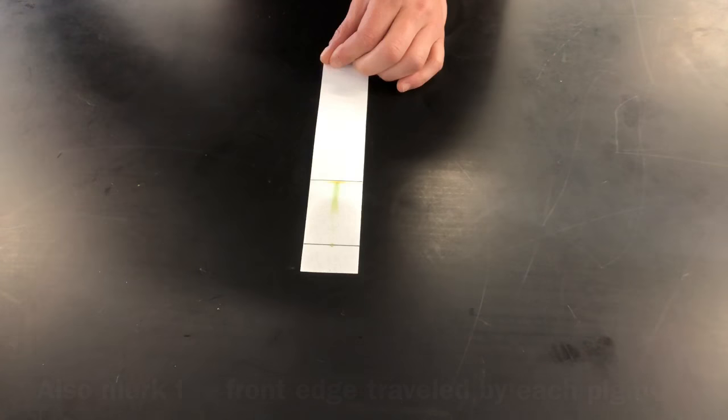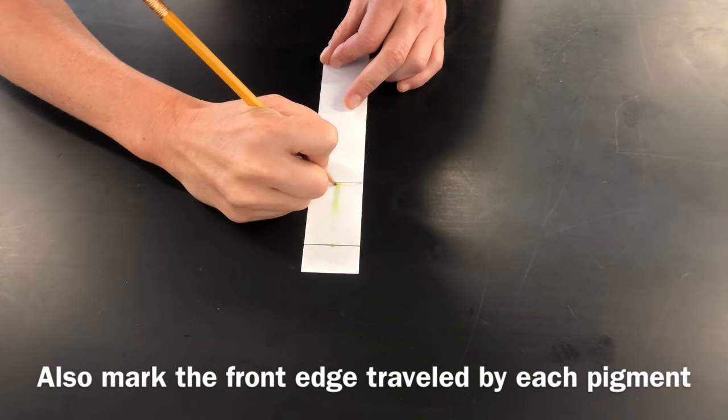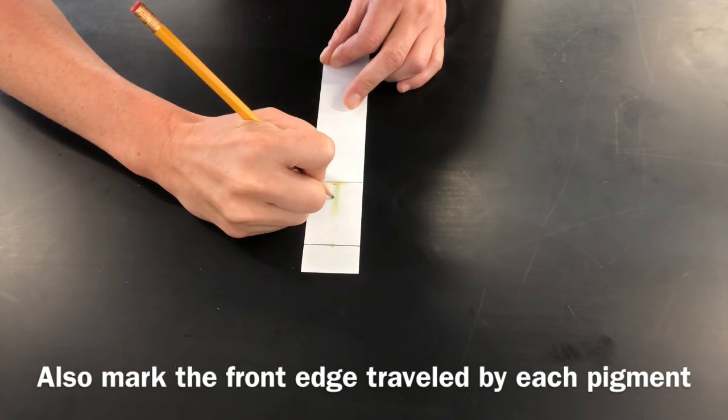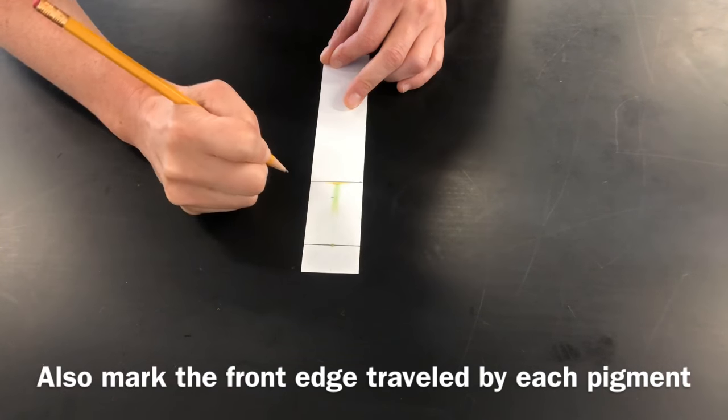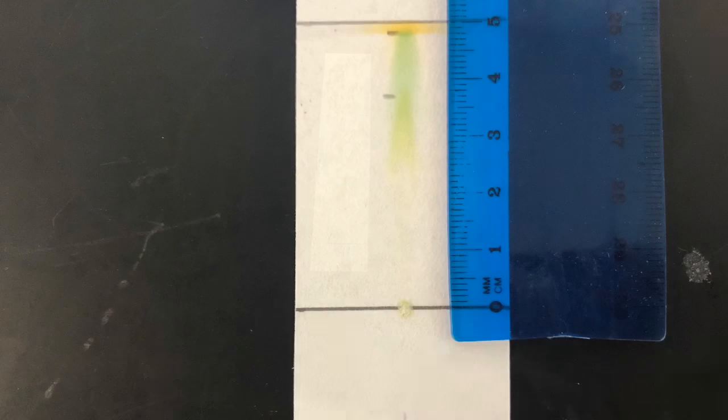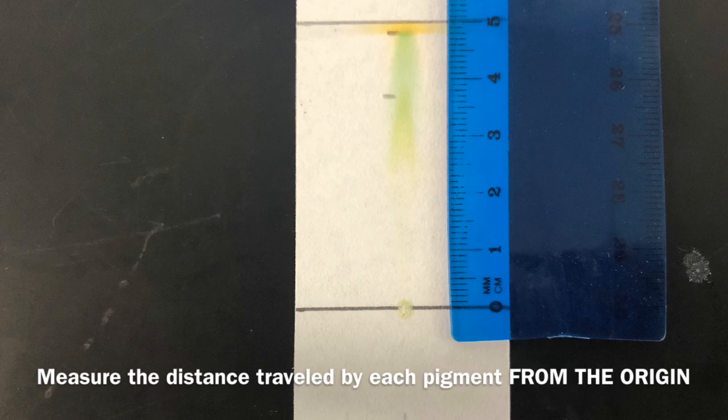Next, you want to mark the front edge of each pigment, so that's each color, and you want to measure how far each pigment or each color moved from the point of origin, the original pencil line that you drew.